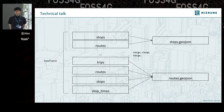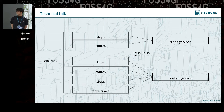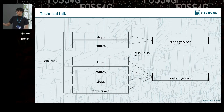Basically, GTFS Go exports two data types: stops and routes. Stops is simple — I can make stops data from two tables. But routes is somewhat complicated. I need four tables and joining and merging to get one big table.